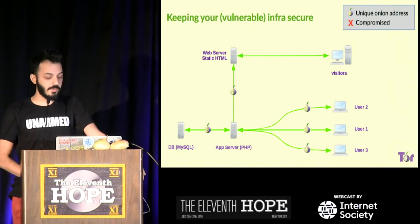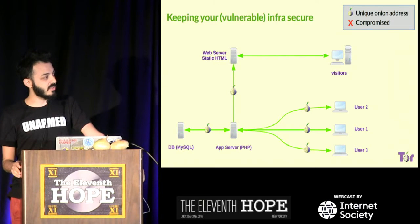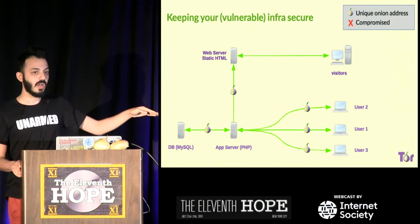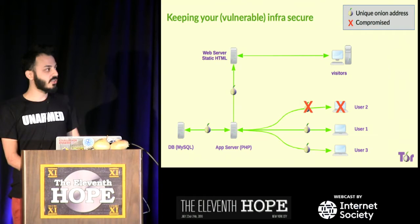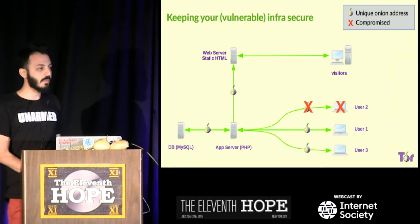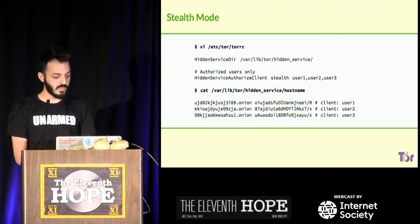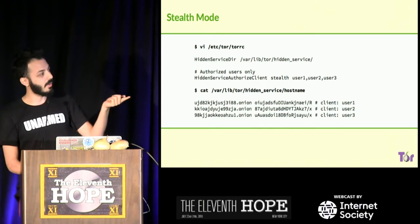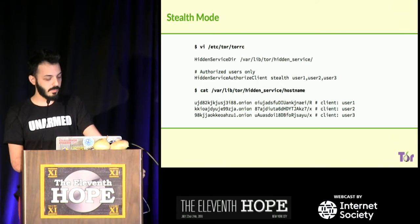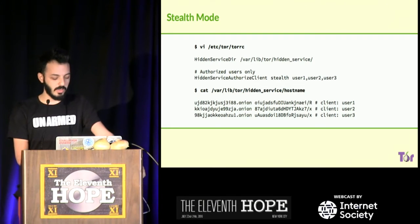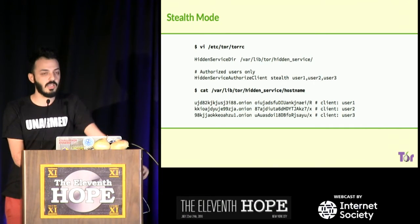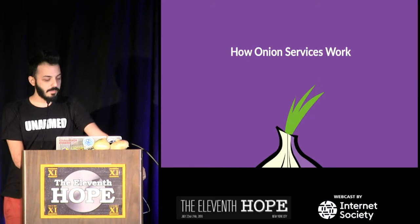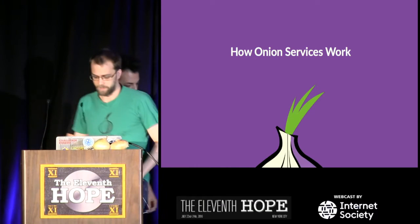If you have multiple contributors, each contributor gets a unique onion address. So if one of them gets compromised for whatever reason, you don't need to change anything. All you have to do is comment out that user from your torrc file, and basically that onion doesn't work anymore, and you leave the rest of the infrastructure in place — nothing else is compromised.